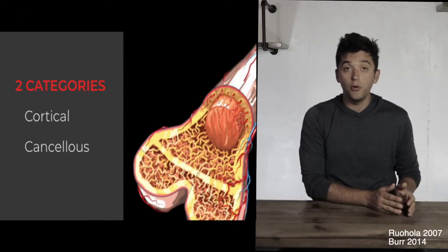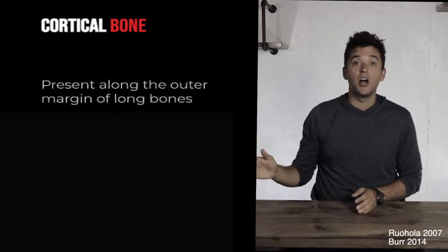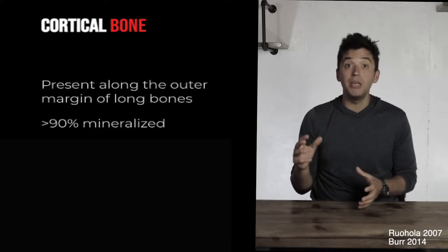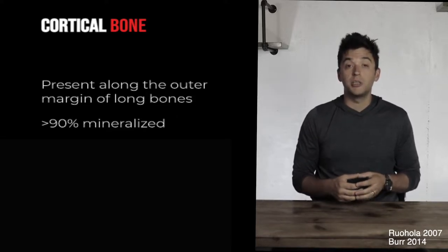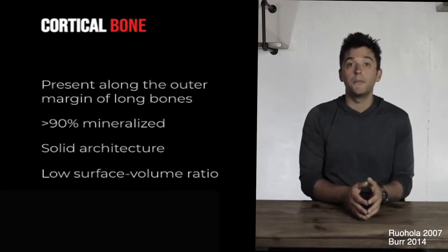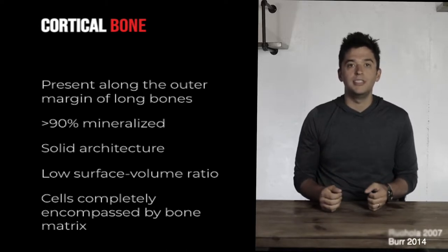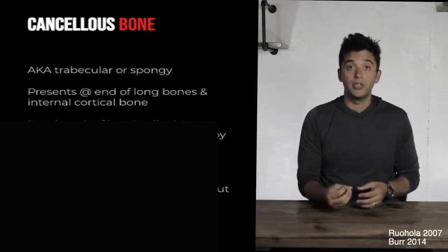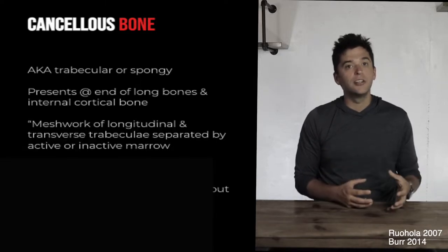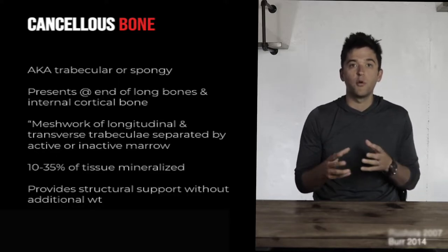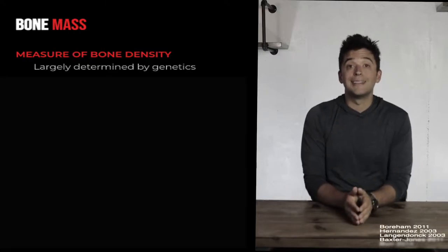We have two types of bone in the body: cortical and cancellous (spongy) bone. Cortical bone exists along the outer edge of long bones — it's highly mineralized, very strong, has a low surface-to-volume ratio, and helps us deal with loads. Spongy bone is present at the ends of long bones, more internal, less mineralized, and its job is to help with endocrine functions and transfer forces throughout the body.